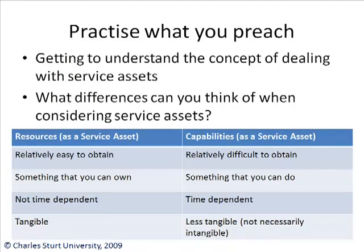Practice what you preach — getting to understand the concept of dealing with service assets. What differences can you think of when considering service assets? Resources are typically relatively easy to obtain, something that you can own, not really time-dependent, and more or less tangible. Capabilities, on the other hand, are more difficult to obtain — typically something that you can do rather than something you own. They're time-dependent; it takes time to build up your skills, and they're less tangible. See if you can find some more differences between resources and capabilities.